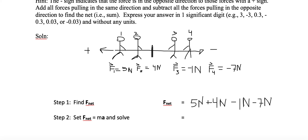So we add them up: 5 plus 4 is 9, minus 1 is 8, minus 7 is 1. We have a net value of 1 newton. Since I declared to the left as positive and our answer is positive, the net force is directed to the left. That's our F-net solution.